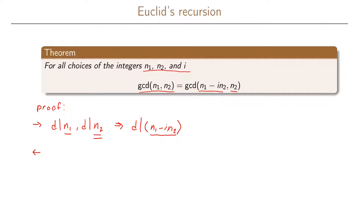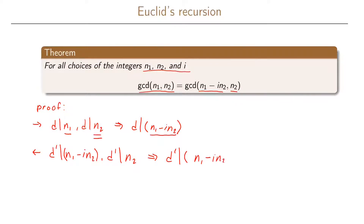The proof in the left direction is very similar. Here we have that if an integer d' divides n1 minus i*n2 and it also divides n2, this means that this integer must also divide n1 minus i*n2 plus i*n2, which equals n1. So all integers that divide both n1 minus i*n2 and n2 will also divide n1 and n2. Since all these integers divide in both directions, the greatest common divisor is the same.